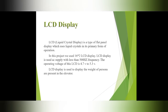LCD display: this is a type of flat panel display which uses liquid crystals in its primary form of operation. In this project we use a 16x2 LCD display. The LCD display is used with an AC supply at less than 500 Hz frequency, and the operating voltage of this LCD is 4.7 V to 5.3 V.